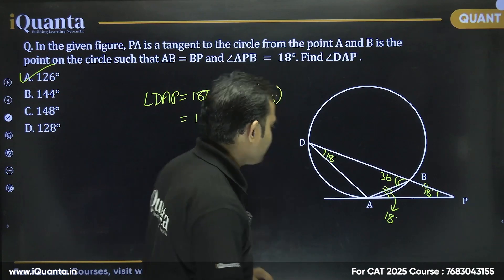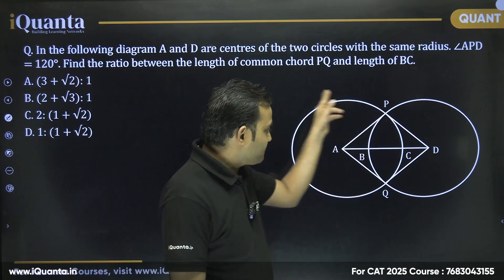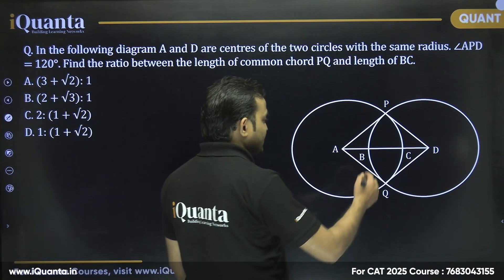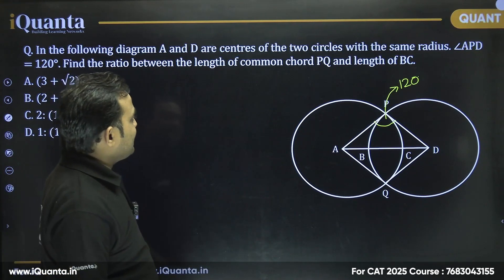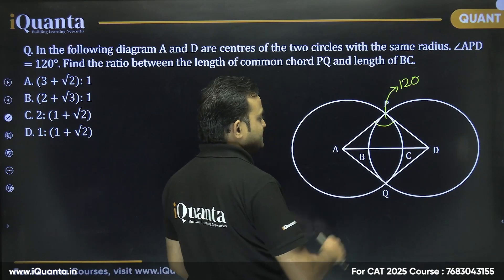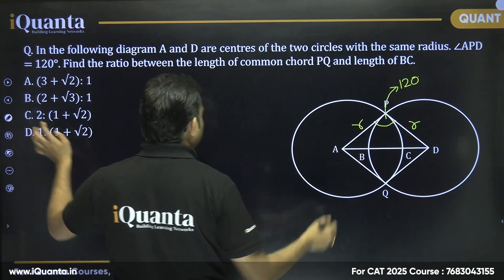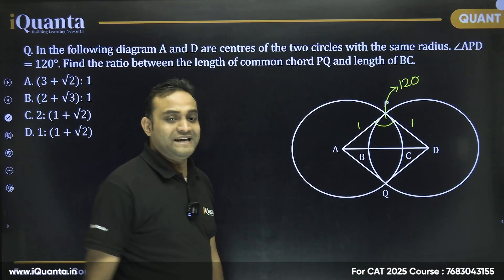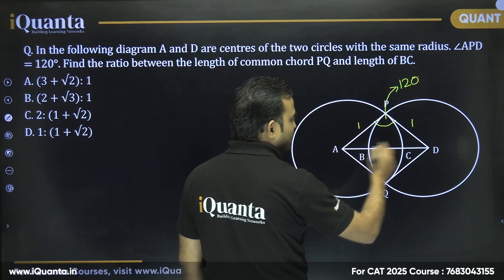Next question: in the following diagram, A and D are the centers of two circles with the same radius. Angle APD is 120 degrees. Find the ratio between the length of the common chord PQ and the length of BC. Since AP and PD are both radii, let's set AP = PD = 1.